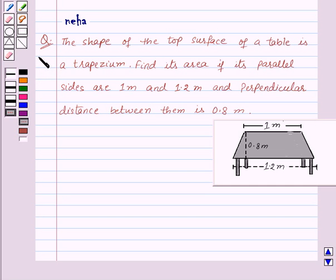The question says the shape of the top surface of a table is a trapezium. Find its area if its parallel sides are 1 meter and 1.2 meter and perpendicular distance between them is 0.8 meter.